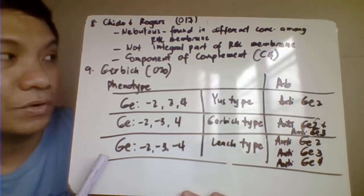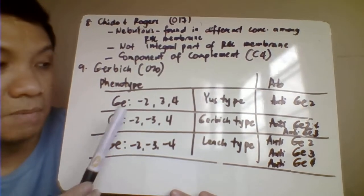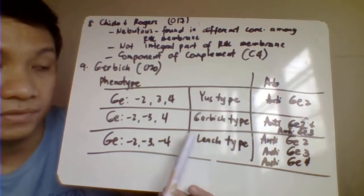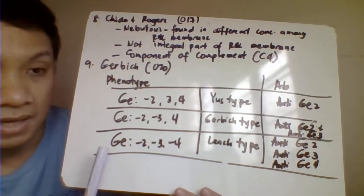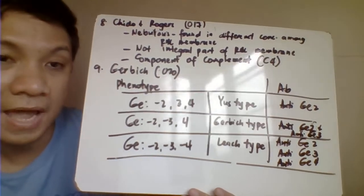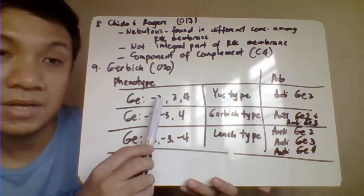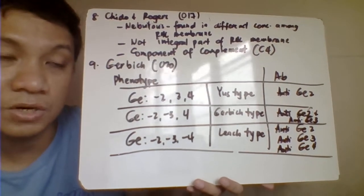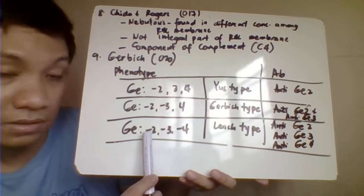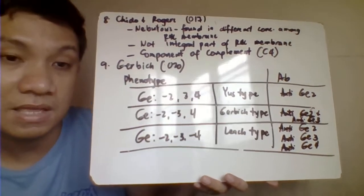Next we have Gerbich, 020 ISBT classification number. We have different phenotypes: Gerbich 2 negative, 3 positive, 4 positive, or the use type. Gerbich 2 negative, 3 negative, 4 positive, that's your Gerbich type. And we have the Gerbich null, 2 negative, 3 negative, 4 negative, that's your leach type. For this one since there are no antigens, it would have your tendency to develop an anti-Gerbich 2 antibody, anti-Gerbich 3 because negative for these, and anti-Gerbich 4 because of the negative antigen for that.